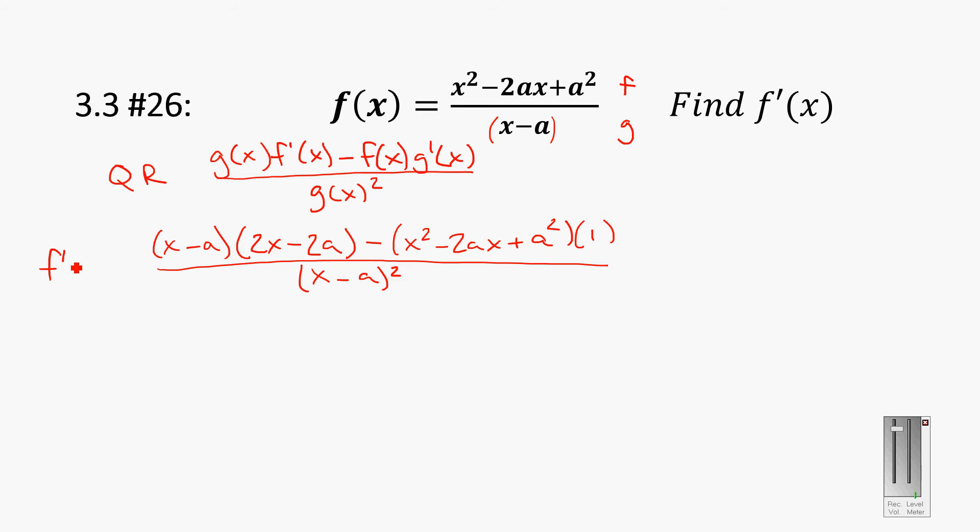So I'm just going to leave it right now as x minus a squared. You may discover later on that you want to expand that out because it may cancel something out on the top. I don't see anything at this point, so I'm just going to leave it alone. So this is f prime of x. f prime of x equals that. Now we need to do some distributing of these variables to try to see if there's anything we can get rid of.